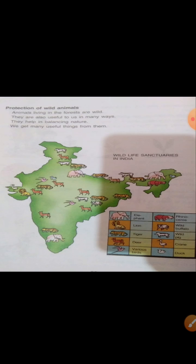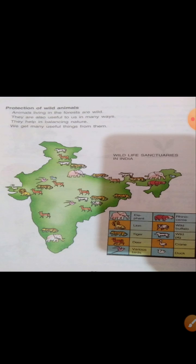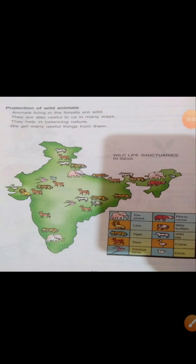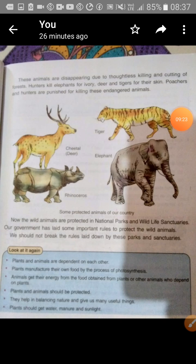Try to make a map of India and mark these sanctuaries on it. This will help you know where each sanctuary is located, and you can visit them with your parents. The animals shown here include cheetah, deer, rhinoceros, tiger, and elephant — all protected in wildlife sanctuaries.